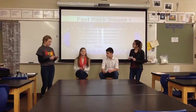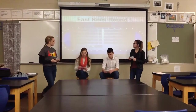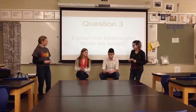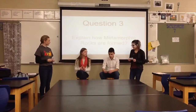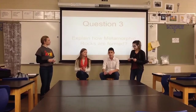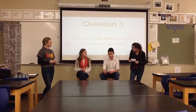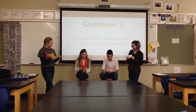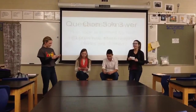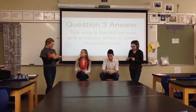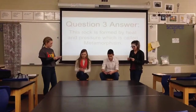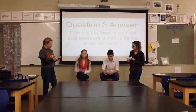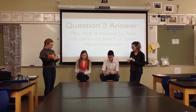Question 3: Explain how metamorphic rocks are formed. Contestant 1 answered: It's formed by the heat and moisture, called metamorphic. Contestant 2 answered: It's formed by the heat and pressure, which is called metamorphic. Contestant 2 is right. Metamorphism is the process by which a rock's structure or composition is changed by pressure, heat, and moisture. This leads to chemical or structural change due to the effects of heat and pressure, making metamorphic rocks.